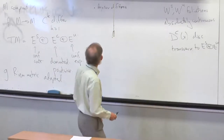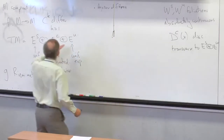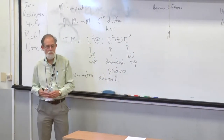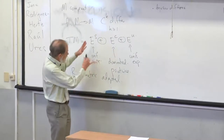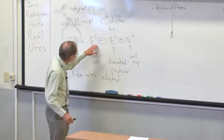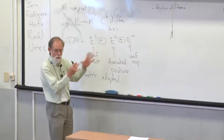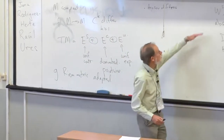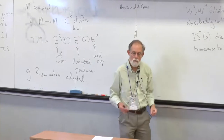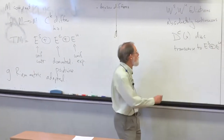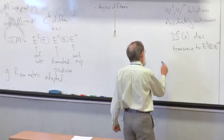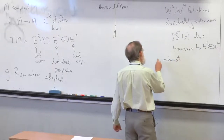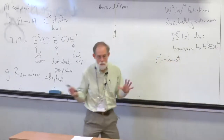This structure is robust under C1 perturbation. If I make C1 perturbations, the splitting varies continuously, and the leaves of these foliations vary continuously. So I'll say C1 robust.